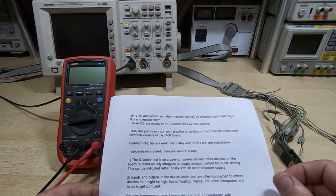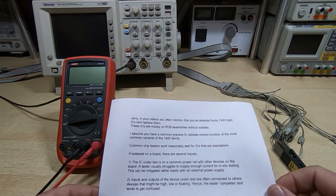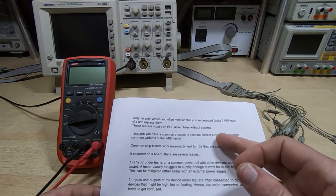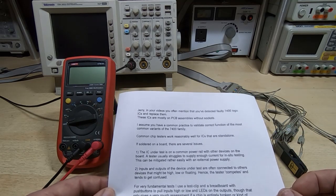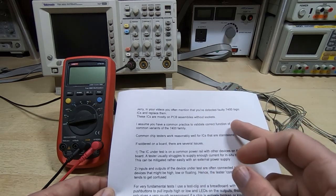They are very prone to signal integrity problems where the outputs of one device might be switching, but might be too slow or insufficient amplitude to drive the circuit inputs that they're connected to. So, yes, it's easier for a socket. If you suspect a faulty IC, it's very easy to swap.